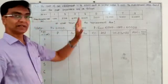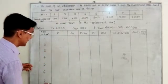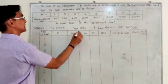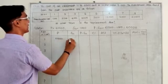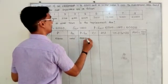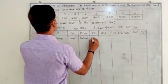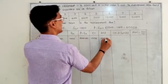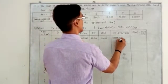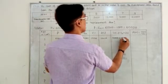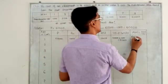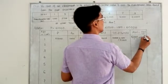The maintenance cost for 8 years has been given. For the first year: P is 61,000 and S_N is 1,000, so P minus S_N is 60,000. C_I for the first year is 1,000. So P minus S_N plus C_I gives 61,000, and 61,000 divided by 1 equals 61,000.